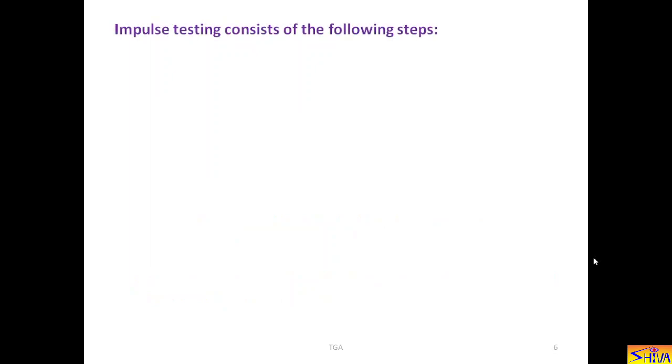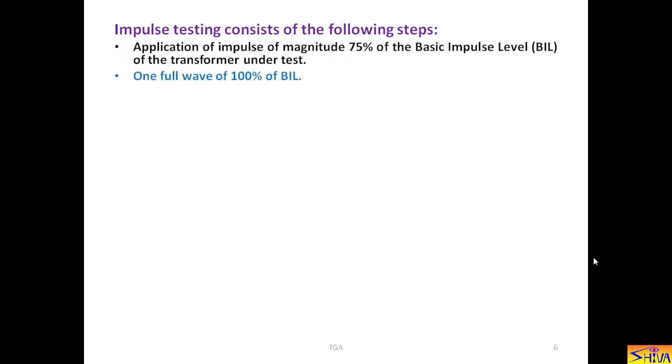Now, let us see what are the steps involved in impulse testing of the transformer. First, application of impulse of magnitude 75% of the basic impulse level of the transformer under test is applied. So, if BIL of the transformer is 1000 kV, then impulse voltage magnitude peak value should be 750 kV. And it is applied to the transformer under test.